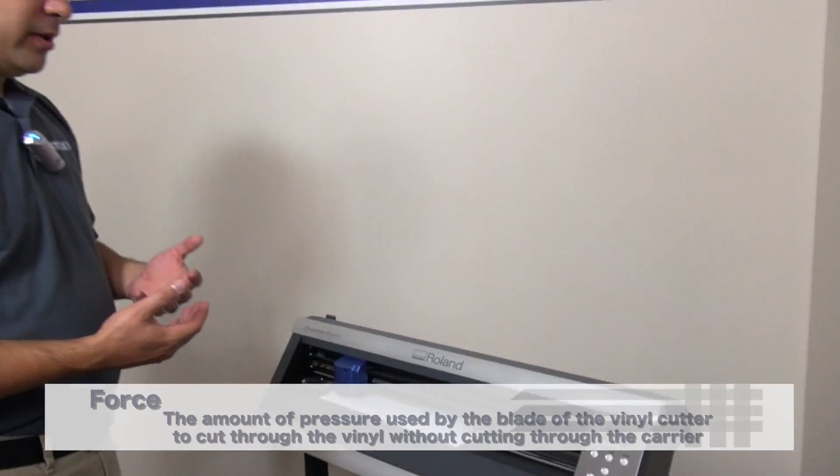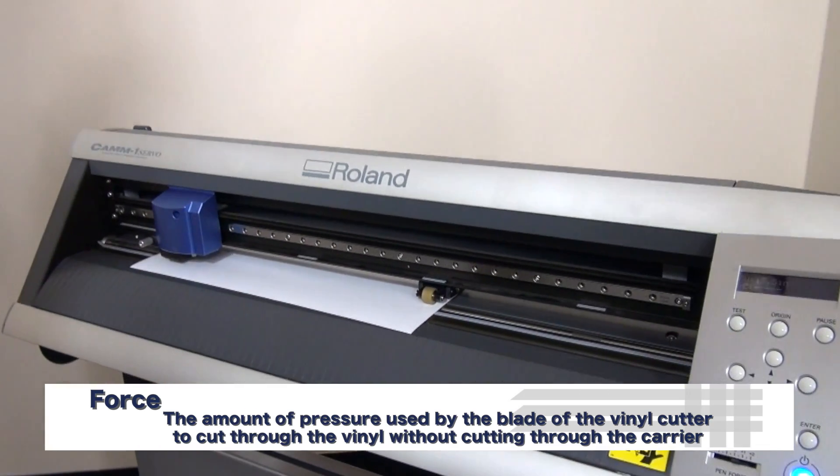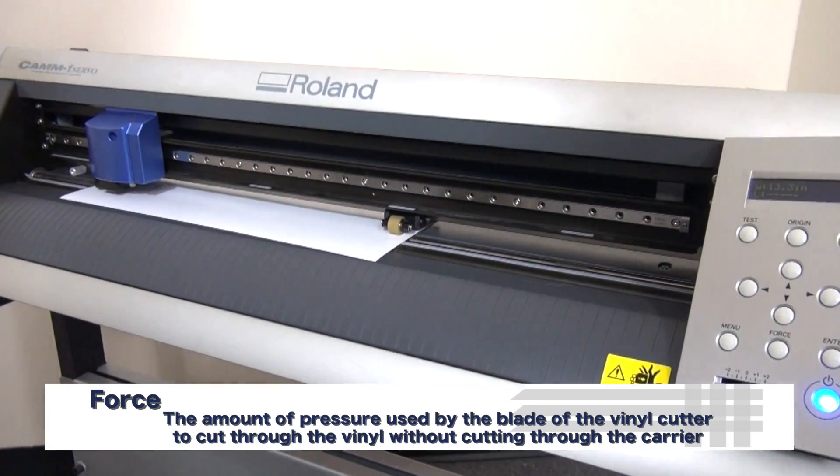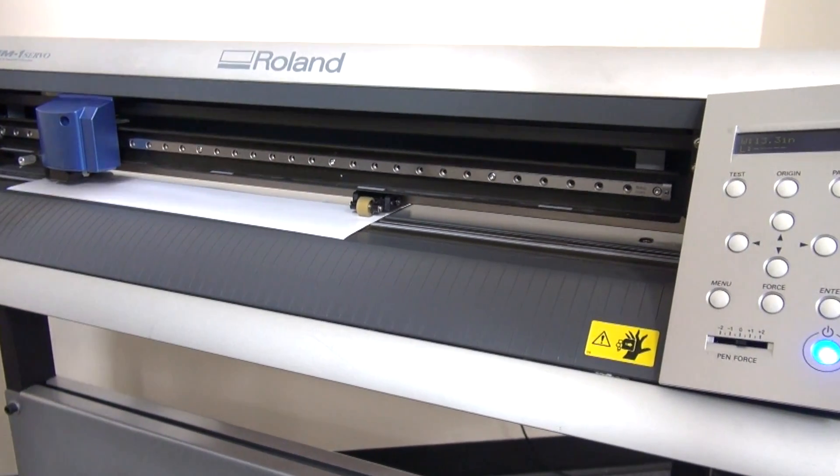The first thing you want to do in order to test the force of your cutter is you're going to want to do a test cut. A test cut is simply ensuring that the blade is going to cut properly through the vinyl so that it's going to ensure proper weeding.